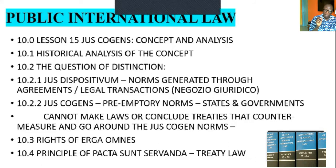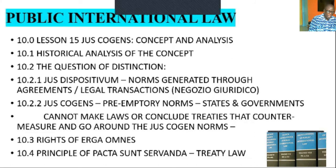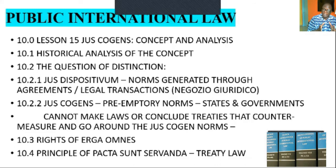Another element related to jus cogens is the principle of pacta sunt servanda. This is another Latin terminology and the oldest principle within customary international law, which has defined the law of treaty — the Vienna Convention of 1969. Pacta sunt servanda: pacta is an agreement, sunt is the verb, servanda is observation. That means the agreement, once entered into, must be observed by the parties that are privy to the contract or agreement. That is what we find in the law of treaty.